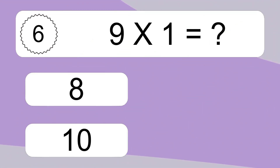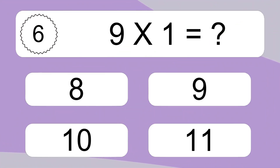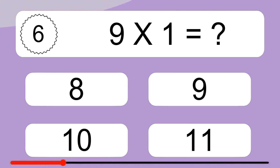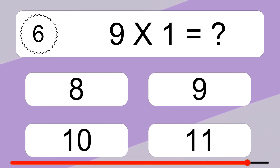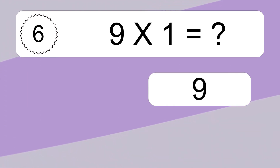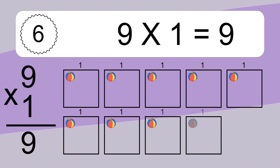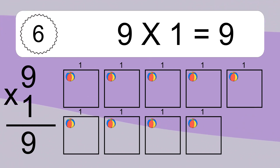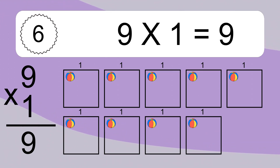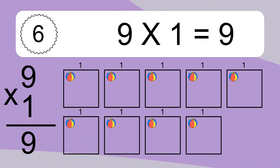9 times 1 equals what? 9 times 1 equals 9. We have 9 boxes, and each box has 1 colorful ball inside. If you count all the balls in all the boxes together, you will have 9 times 1 balls. This equals 9 balls.